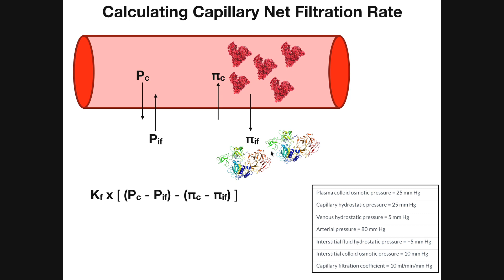The other osmotic pressure is the interstitial fluid colloid osmotic pressure, due to proteins in the interstitial fluid. Its value is 10 millimeters of mercury. These proteins also attract water, tending to pull fluid from the capillary into the interstitial fluid toward themselves. Colloid osmotic pressures are very different from hydrostatic pressures — in fact, they go in opposite directions.